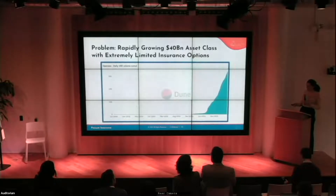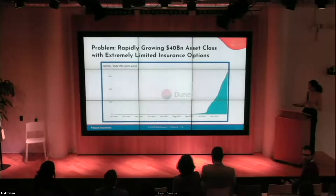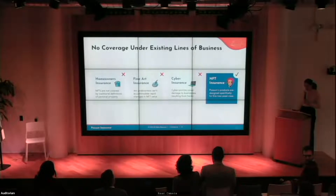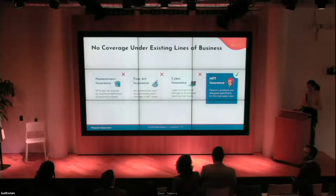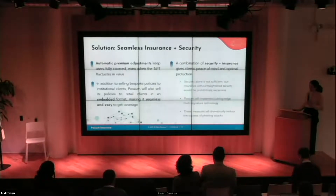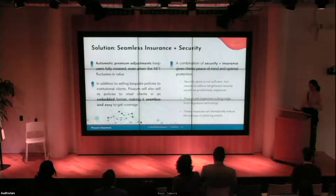The asset class has grown from virtually zero in 2018 to over $40 billion. Existing lines of business do not cover NFTs and are not designed to. For an NFT insurance policy to work, the insurance company needs visibility into the insured's custody arrangements and must account for fluctuations in NFT value and adjust premiums accordingly. Current homeowners, fine arts, and cyber policies do not allow for this. Possum has an escrow-like custody arrangement with its users, giving us full visibility into asset movements — dramatically reducing the potential for users to be defrauded by hackers or to defraud Possum.